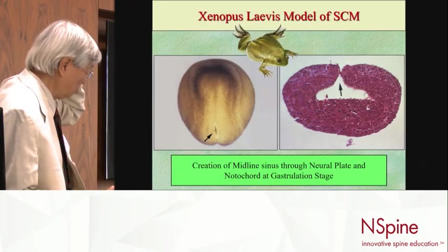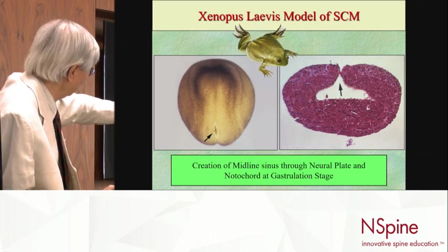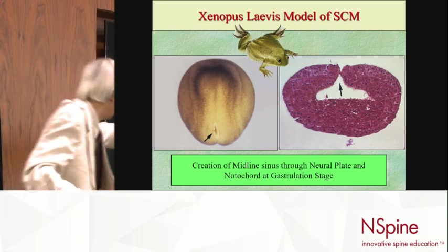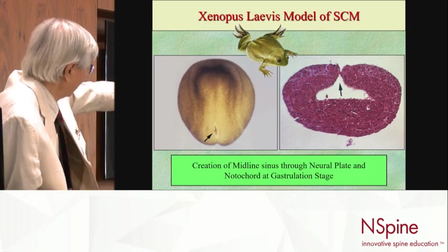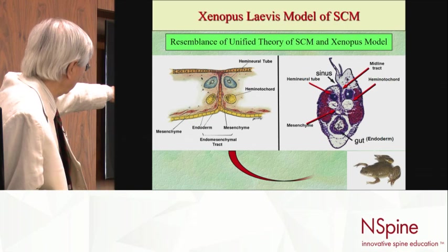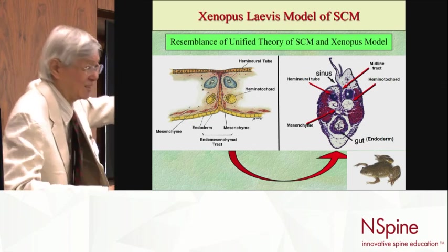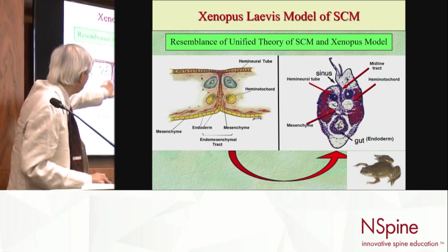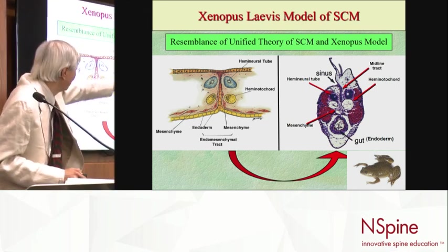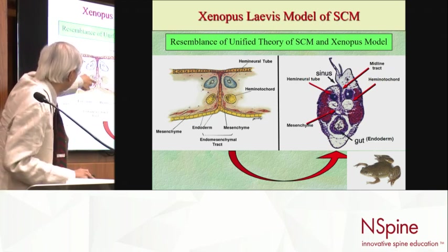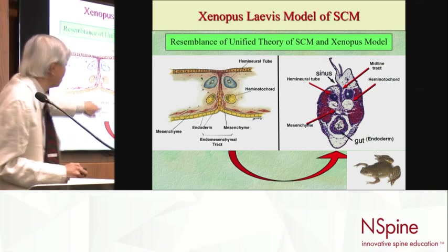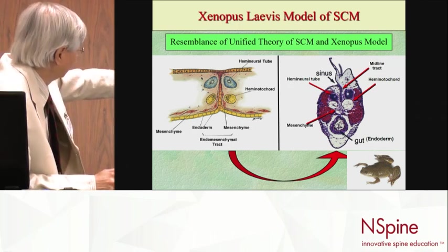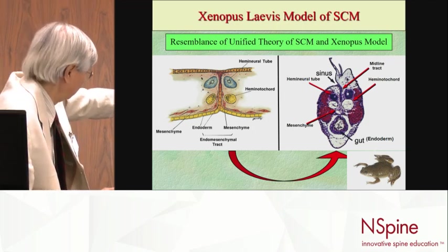We tried to duplicate and validate this mechanism using African clawed frogs. We made a split at the time of gastrulation, and this is our proposed model from 1992 and the refined model from 1998. You can see the incredibly analogous result: hemicord, hemicord in the frog. The midline structure — the endomesenchymal tract — represents the original ectoderm-endoderm adhesion, and the gut (yolk sac) is ventral and attached to one end of that tract, just as in our model.